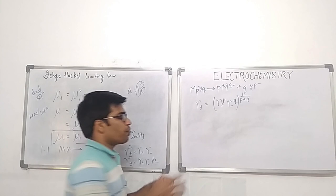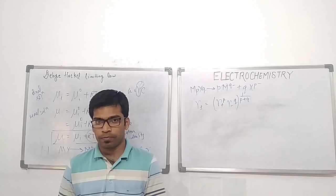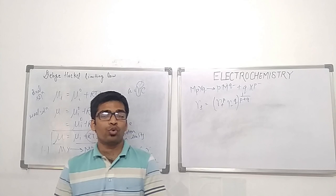In the case of electrolyte solutions, the deviation from ideality is apparent because, in ideal solutions, molecules have no interaction between each other. In real solutions, electrolytes have Coulombic interactions — either attraction or repulsion — and when there are Coulombic interactions, we expect some kind of energy to be involved.